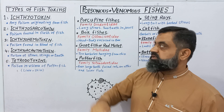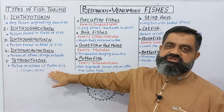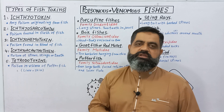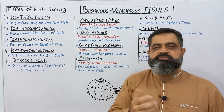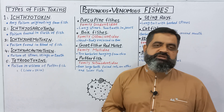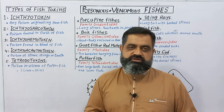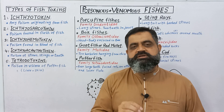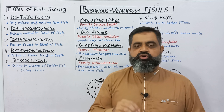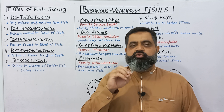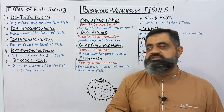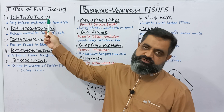Types of fish toxins can be divided into five major categories. The first is Ichthyotoxin. Ichthyo means fishes, toxin means poison. Any poison which is originating from fish is known as Ichthyotoxin. This toxin can be present in the muscles, in the blood, in the visceral organs, or in the form of poisonous glands. Any type of toxin present in a fish is known as Ichthyotoxin.